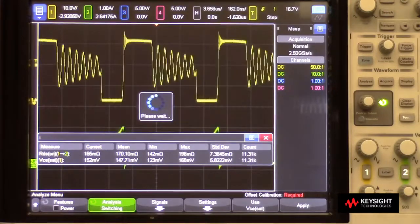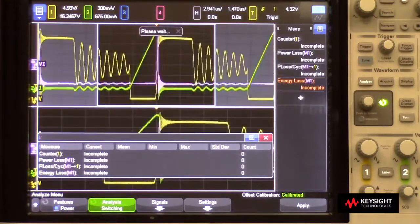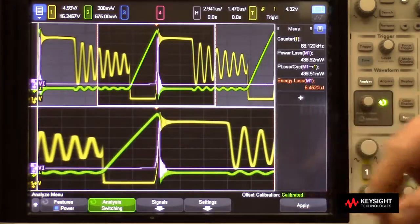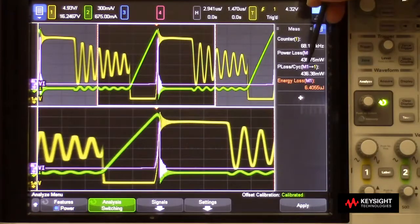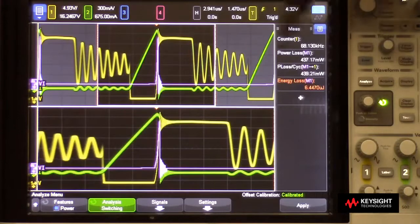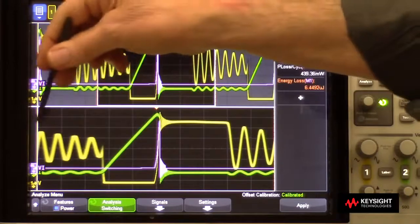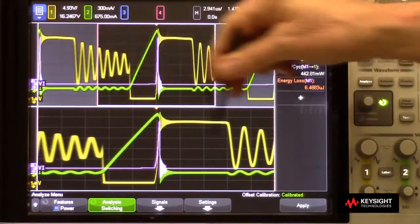Now it's going to rescale the time base, and it's going to turn on the switching loss measurement. Let's turn the statistics off here. And you can see we're measuring about 140 milliwatts of loss across one switching cycle, which is shown here in the zoom time base window.